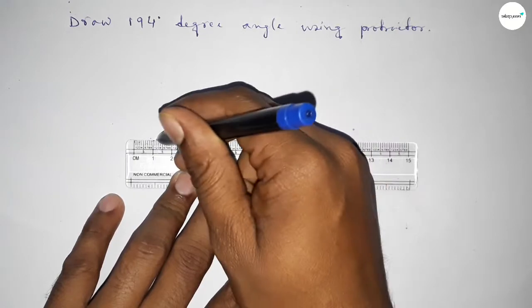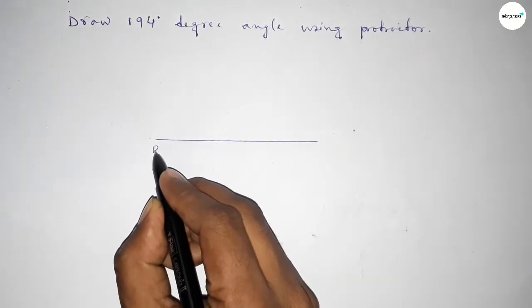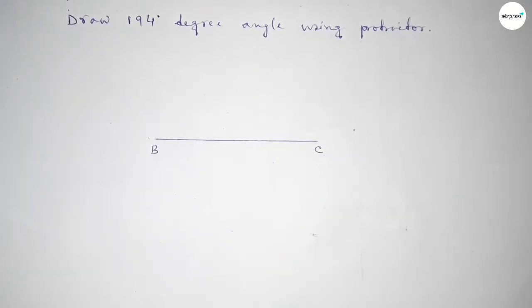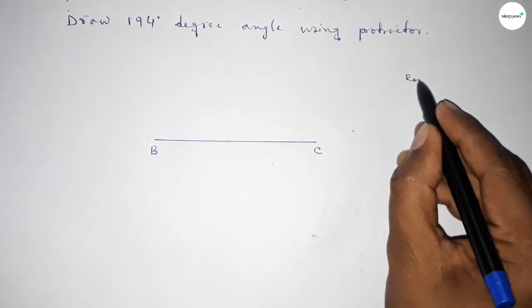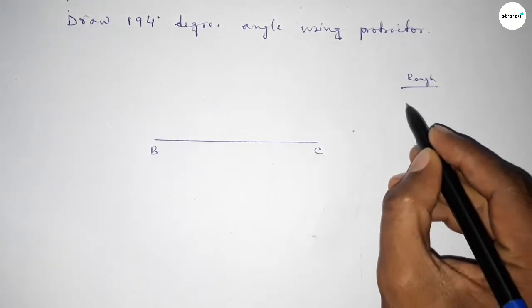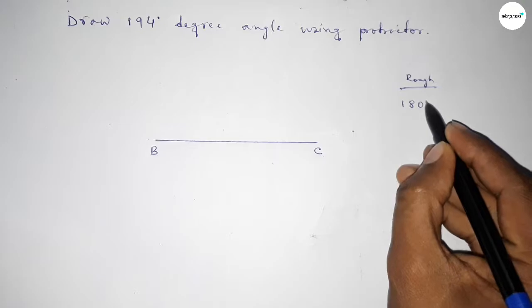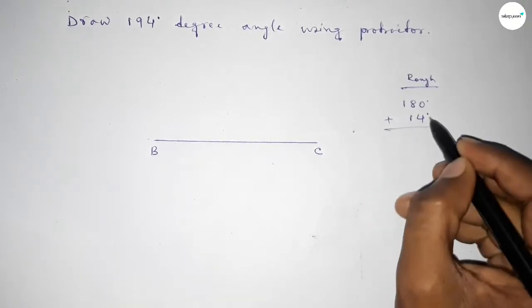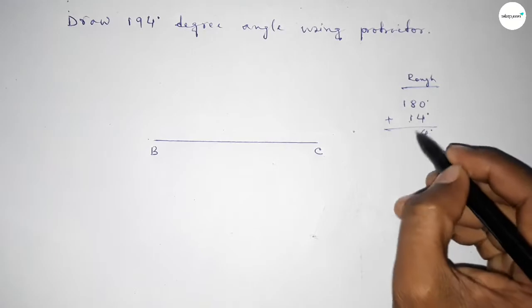First, drawing a line and taking point B here and point C here. Now, roughly discussing some calculation: if we add 14-degree angle with 180 degrees, then we can get a 194-degree angle.